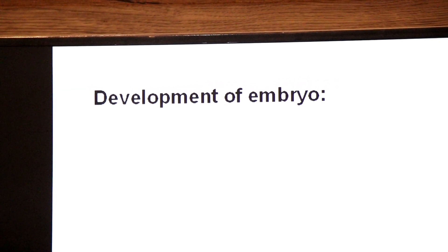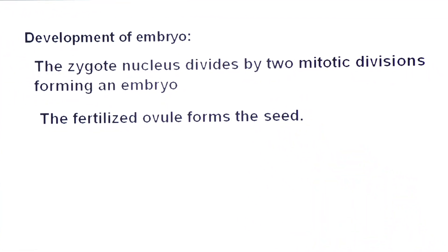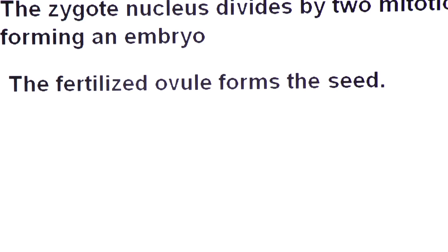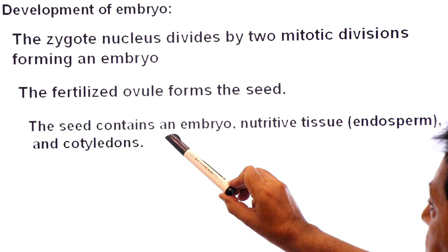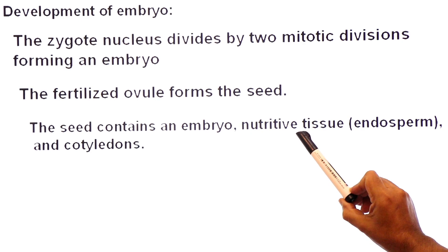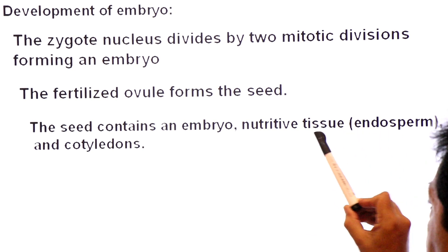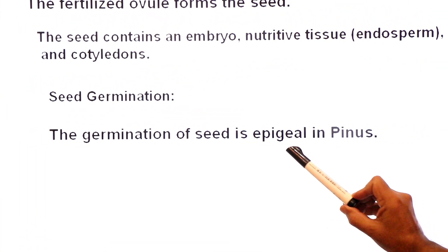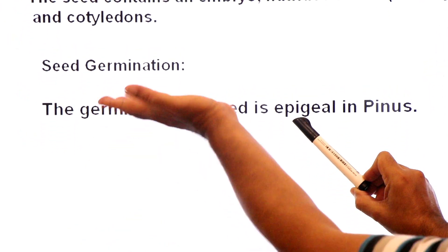After fertilization, the zygote undergoes embryogenesis — the zygote nucleus divides by mitosis to form an embryo. The fertilized ovule develops into a seed. The seed contains the embryo (baby plant), haploid endosperm (nutritive tissue), and cotyledons — seed leaves that absorb food from the endosperm and supply it to the embryo.